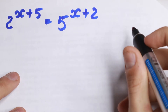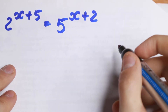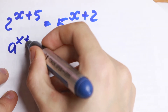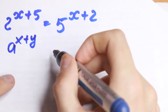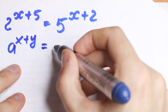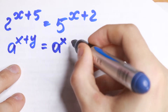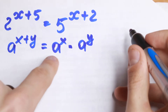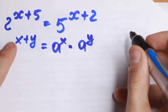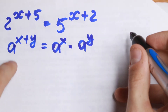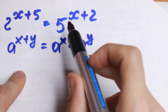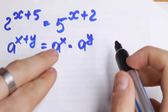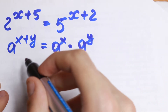First of all, we need to know a really useful rule to solve it. If we have a to the power x plus y — that is, a sum in our exponent — we can write it as a product: a to the power x times a to the power y. We have exactly this case on both sides, so we can use this rule.